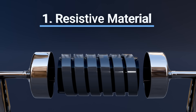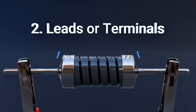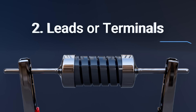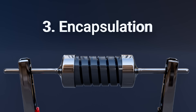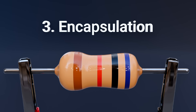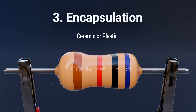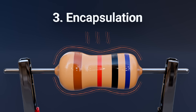Number two: leads or terminals. These are the metal wires or connectors that allow the resistor to be placed into a circuit. They act as pathways for current to enter and leave. Number three: encapsulation. The outer coating, often ceramic or plastic, protects the resistive material from environmental damage like moisture and heat.